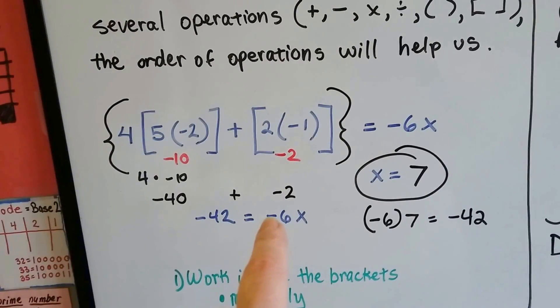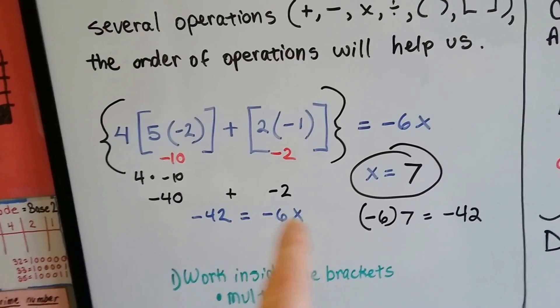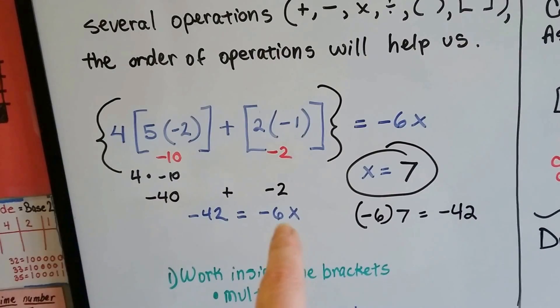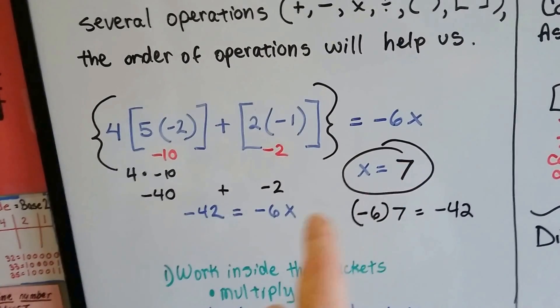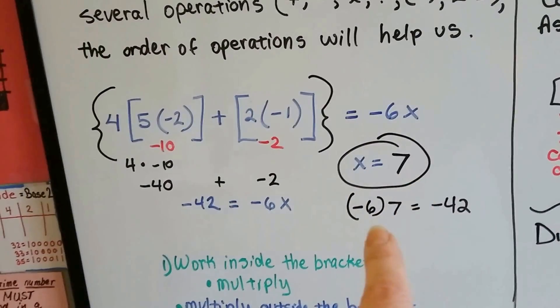Well, if this is a negative and the answer is a negative, the only way to get a negative answer is to have unlike signs. So that means whatever x is, it's positive. 6 times what is 42? 6 times 7. And the 7 has to be positive. So we know that x equals 7.